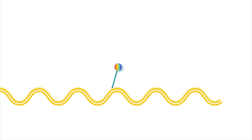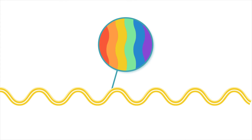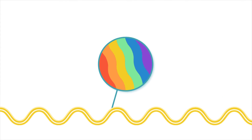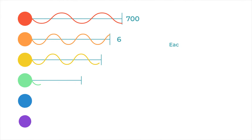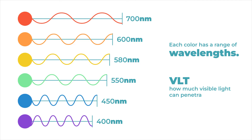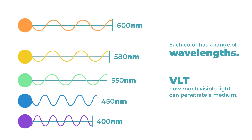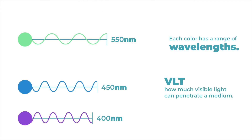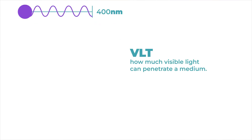Now, let's break it down. The sun emits a spectrum of colors, from violet to red. Each color has a range of wavelengths, and VLT is all about how much visible light can penetrate a medium.